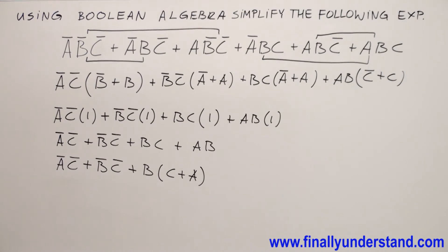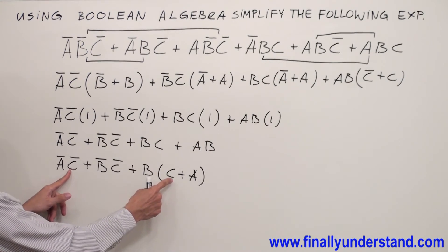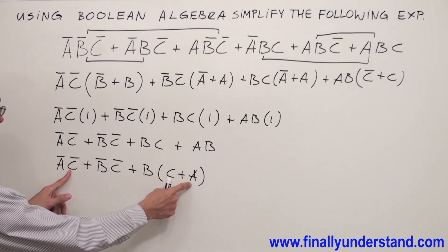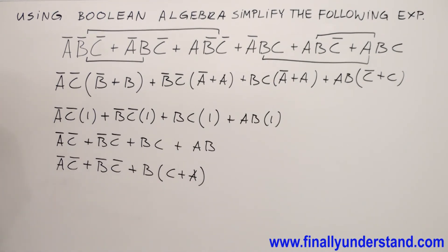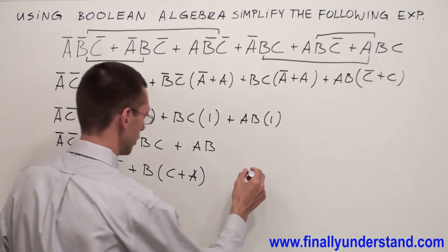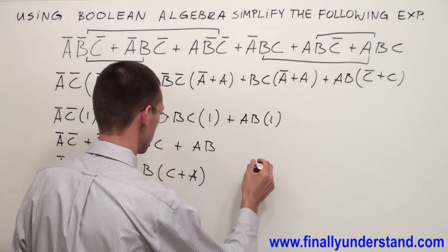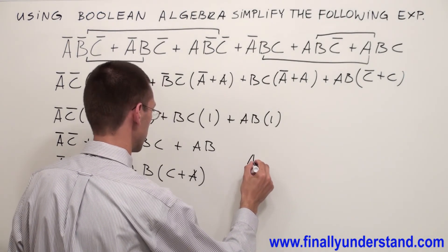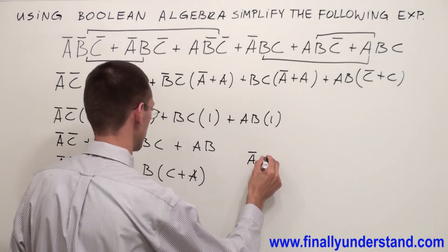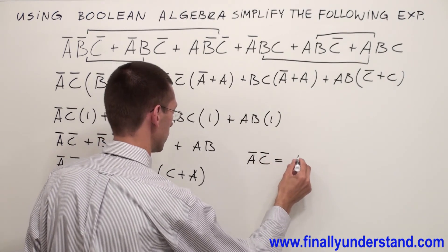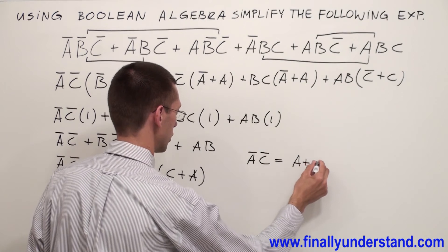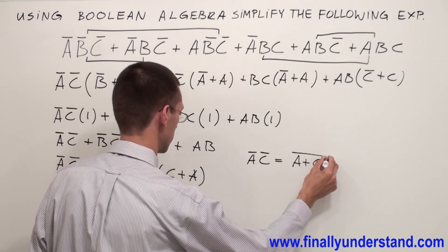Now let's take a look. A̅C̅ and C or A they are complements. Someone is going to ask how come? You have to remember DeMorgan's theorem which says A̅C̅ is equal to A or C̅. Right?